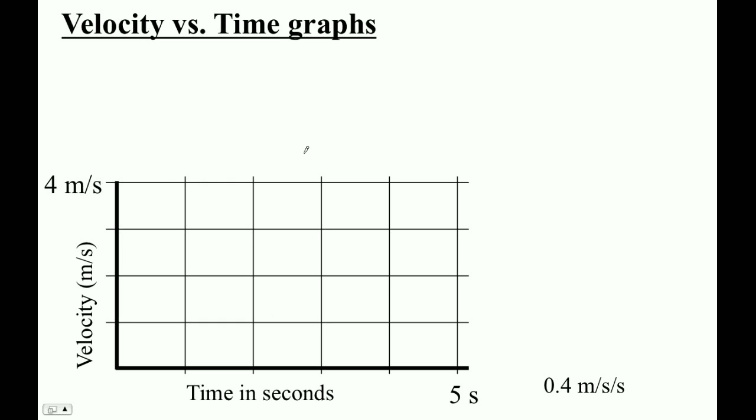Now let's look at a velocity versus time graph. In a velocity time graph, the vertical axis is how fast you're going, what your velocity is. It could go below zero, so it really is velocity. We're only going to look at positive ones now.